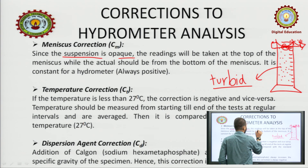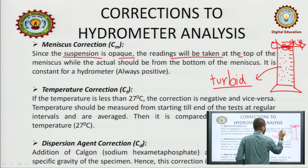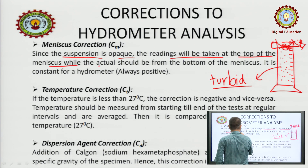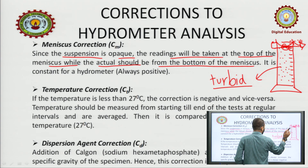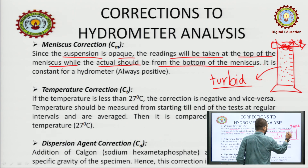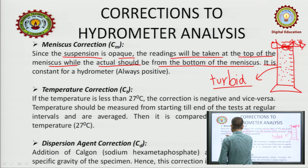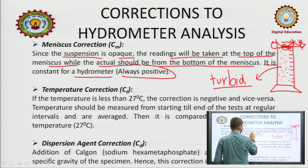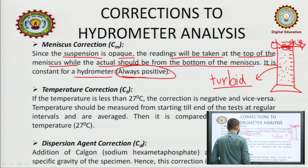Since the suspension is opaque, the reading will be taken at the top of the meniscus, while the actual reading should be taken at the bottom of the meniscus. The meniscus correction is constant for a given hydrometer and is always positive.